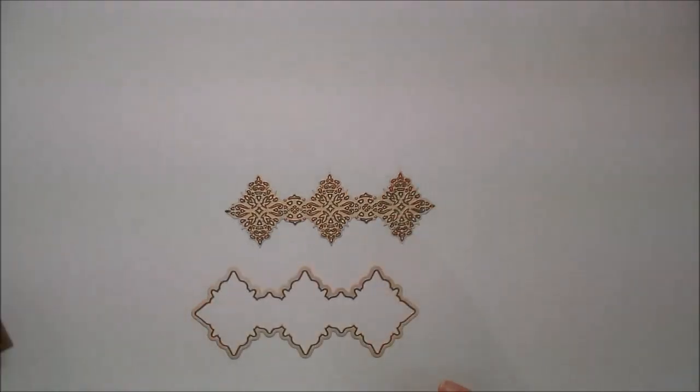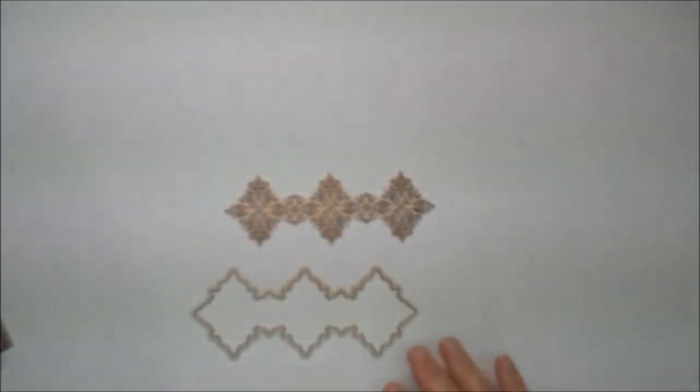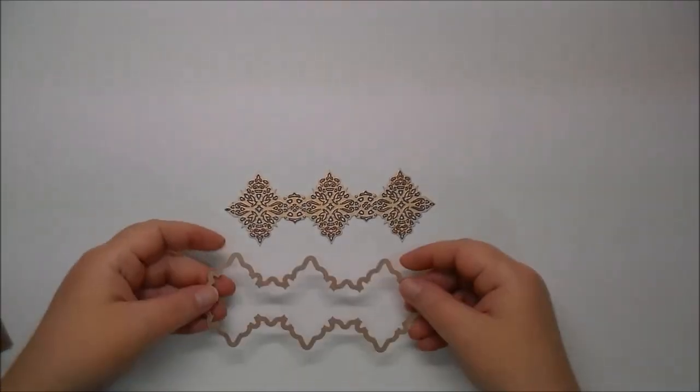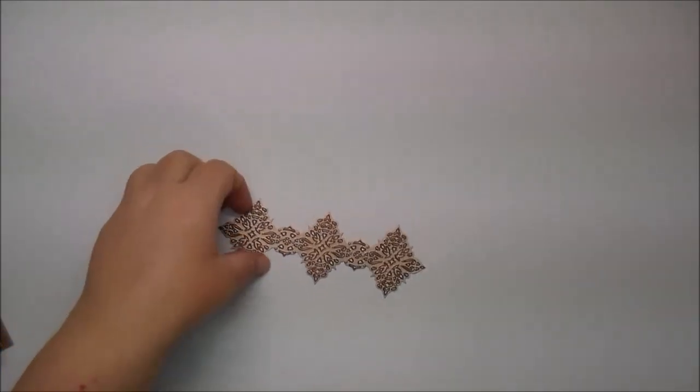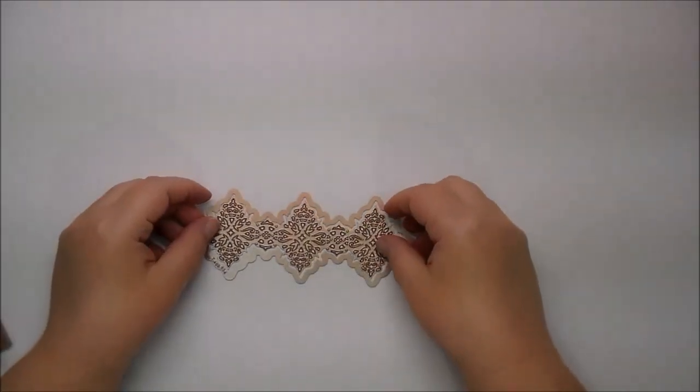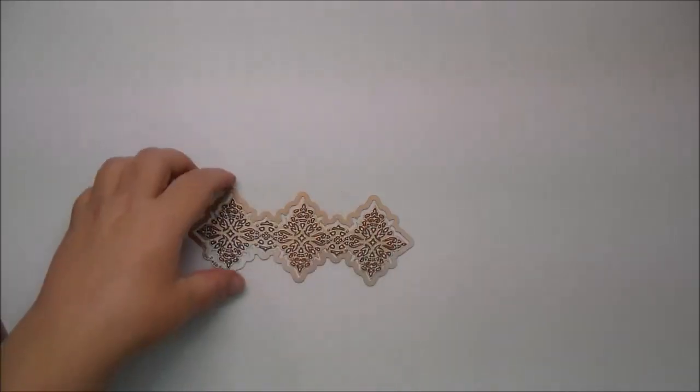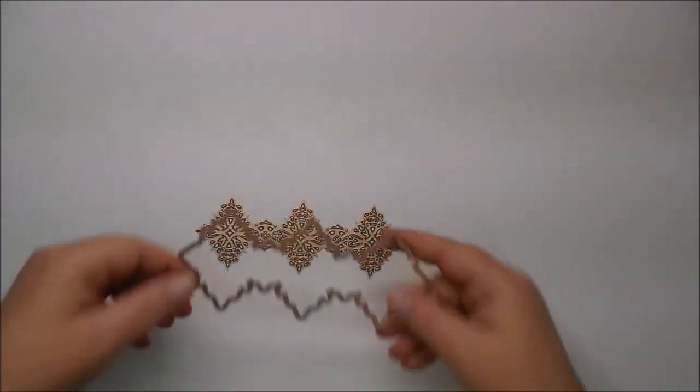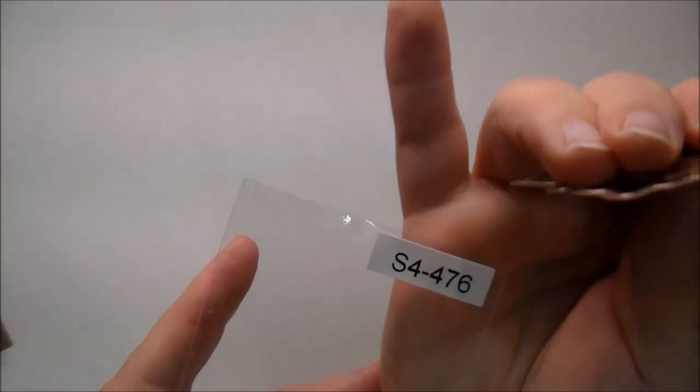The next one is the Sparkle die, which is S4476. And with this one you get two dies. So you can cut out just the outline of it. And these are like little snowflakes. Or you can place it inside of each other and cut out both. So it will cut a perfect border around this if you choose to use both. S4476.